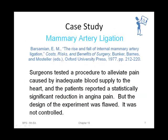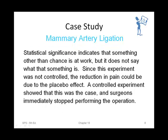Let's look at the memory artery ligation example. Surgeons tested a procedure to alleviate pain caused by inadequate blood supply to the heart, and patients reported a statistically significant reduction in angina pain. But the design of the experiment was flawed — it wasn't controlled — making the conclusions unreliable. Statistical significance indicates that something other than chance is at work, but it doesn't say what that something is. Since the experiment was not controlled, the reduction in pain could be due to the placebo effect. A subsequent controlled experiment confirmed this, and surgeons immediately stopped performing the operation.